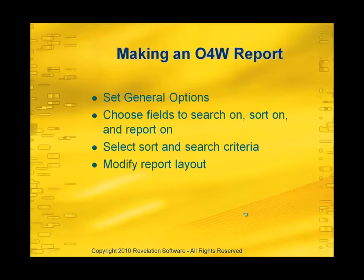There are basically four steps you need to do to create this O4W report. First, you want to choose your general options, such as how many lines per page, whether or not you want to use zebra striping, which data table you want to go against, and options like that.